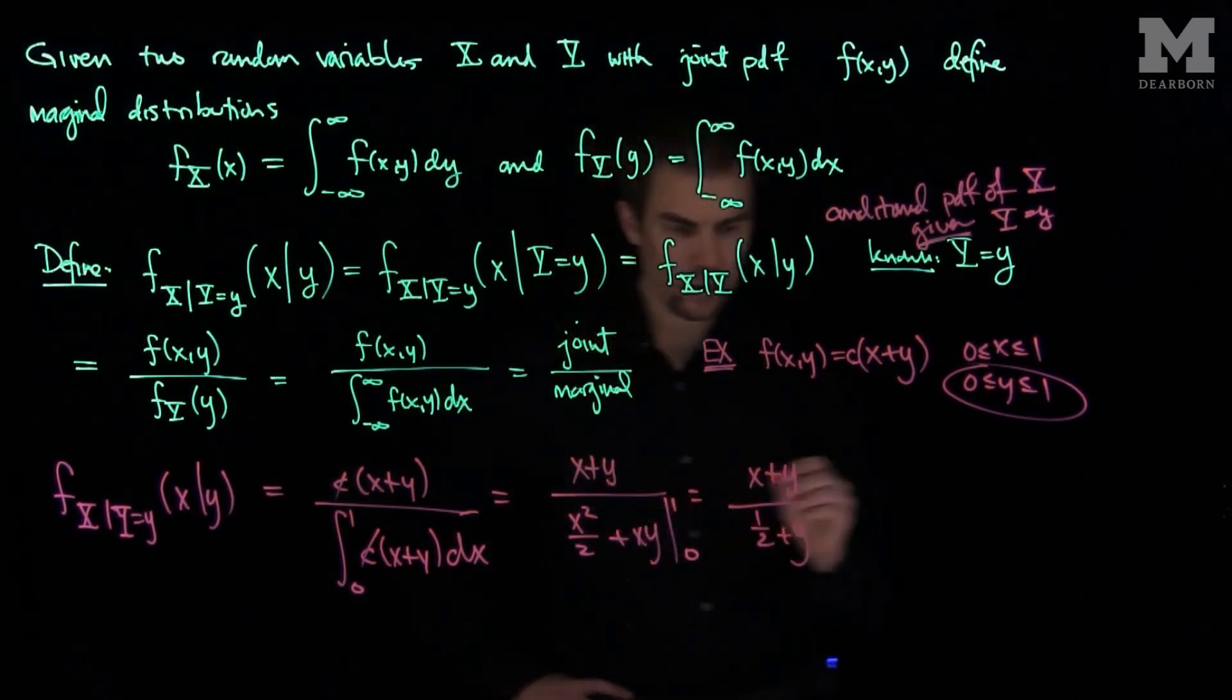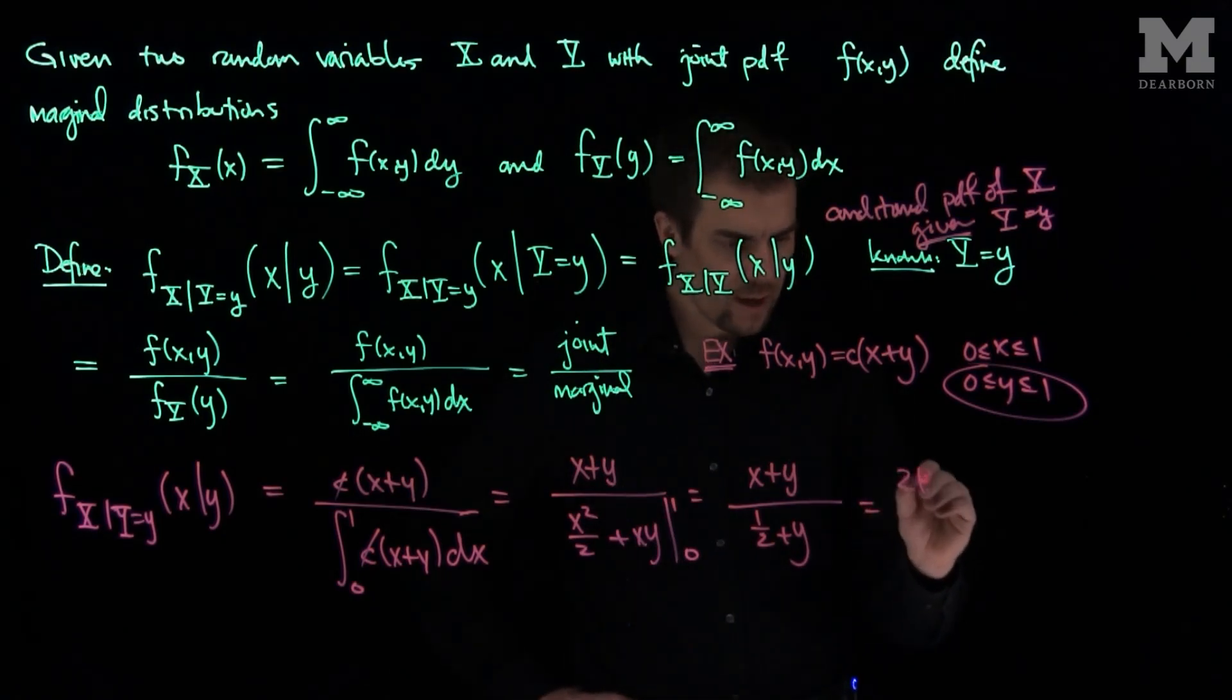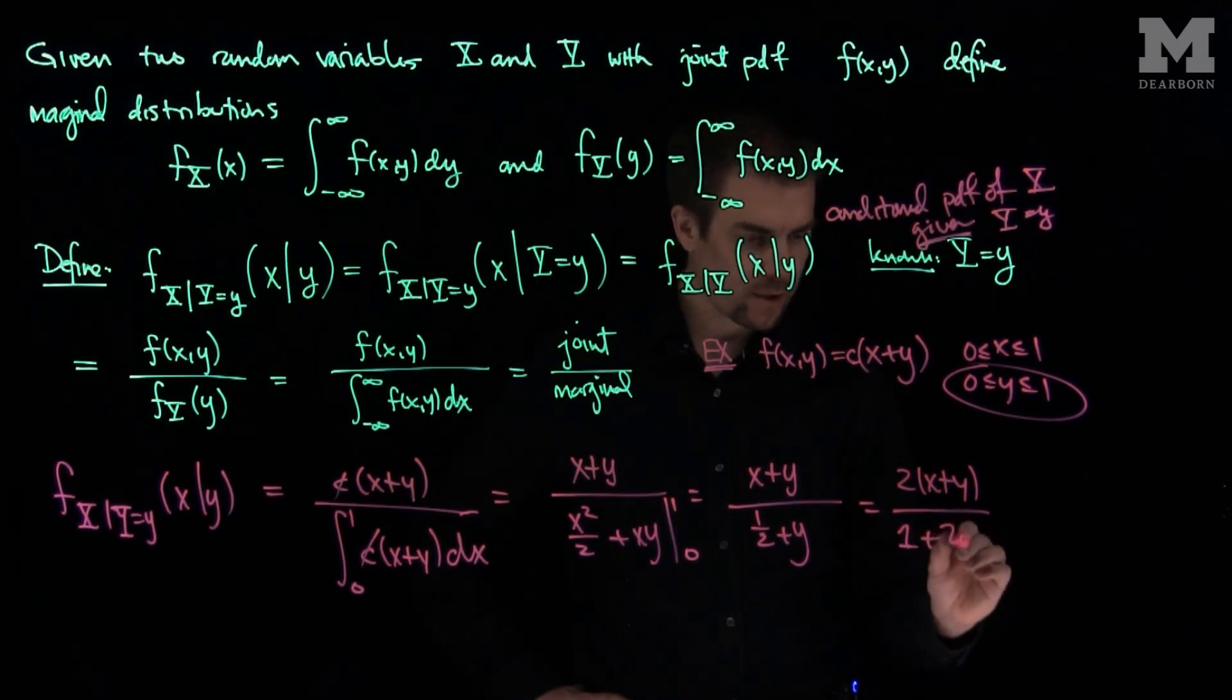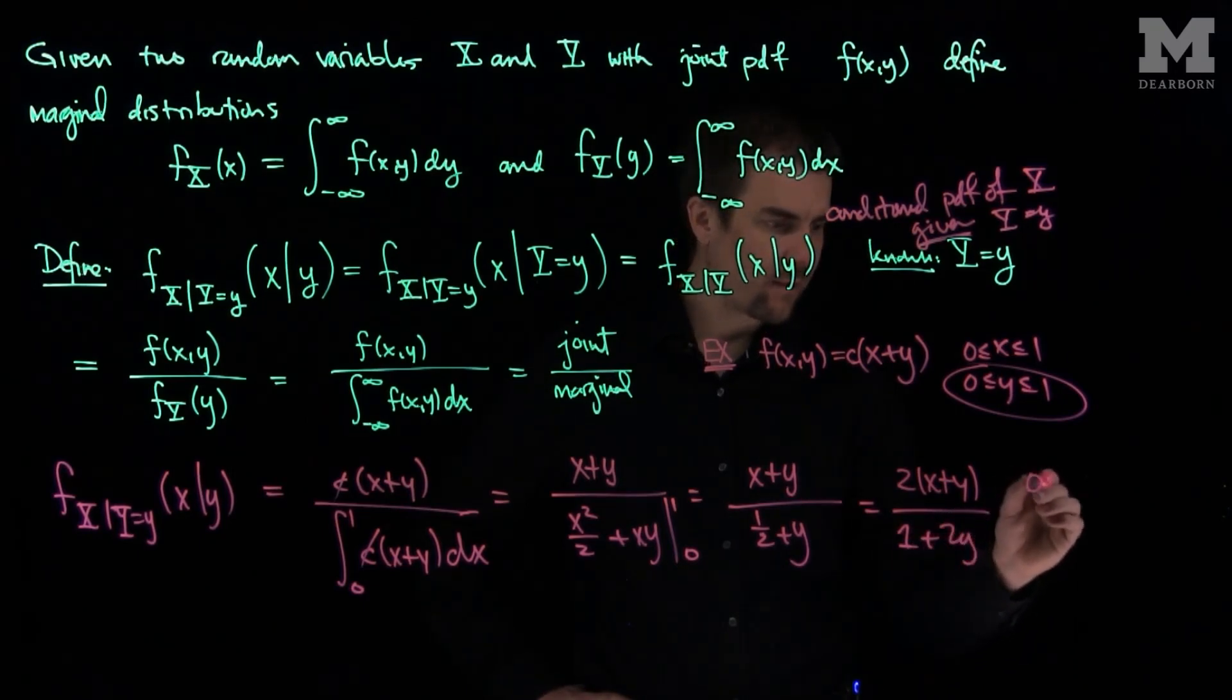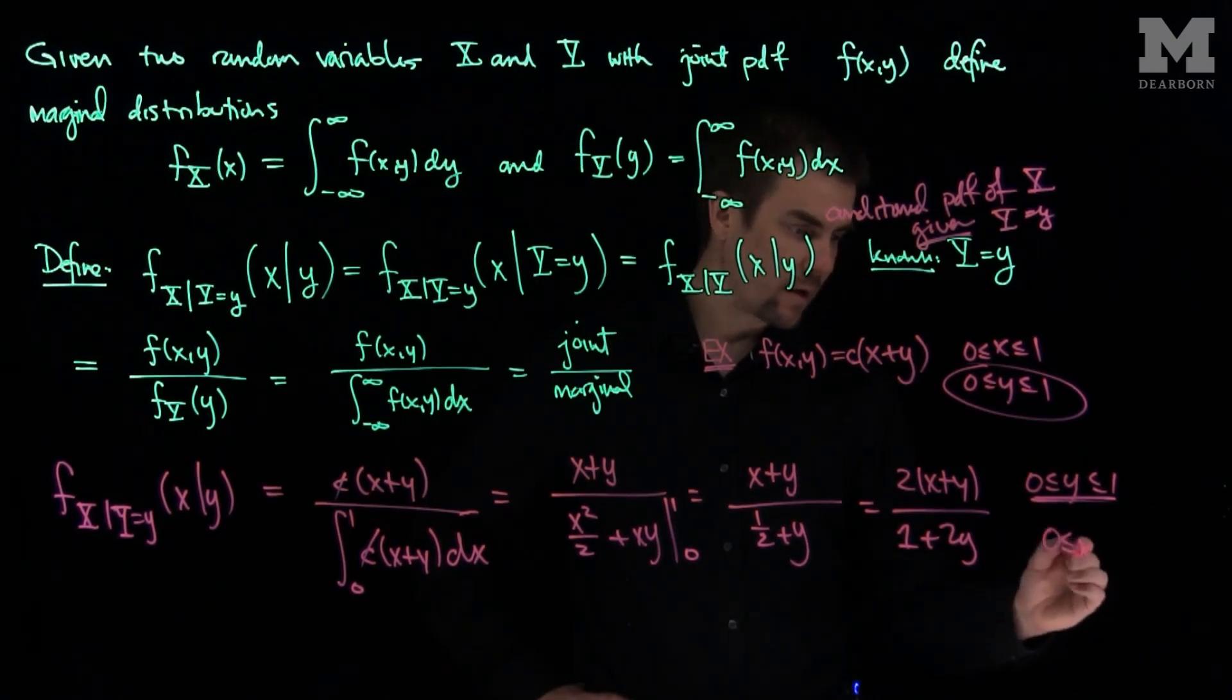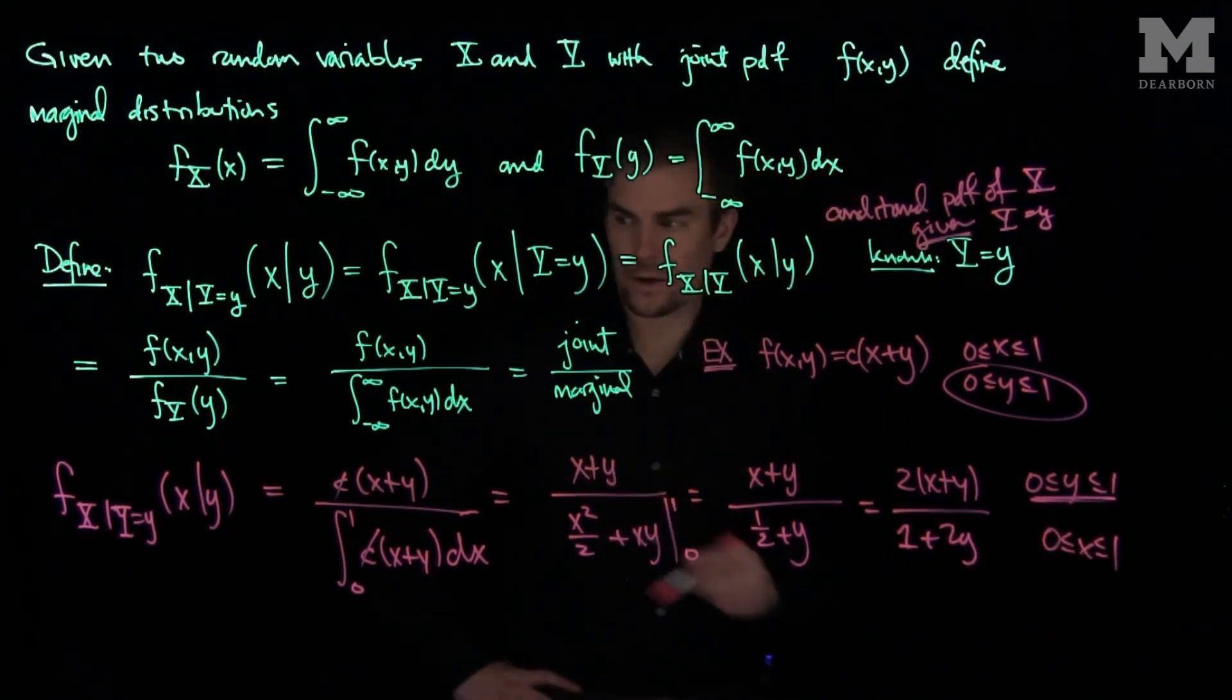And to simplify this, I'll multiply the top and bottom by 2, so we'll have 2(x+y) divided by 1+2y. And this is valid if y is between 0 and 1, but a fixed value of y between 0 and 1, and x between 0 and 1.